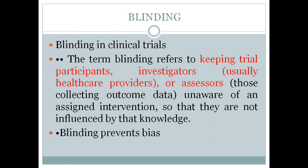In blinding, we have to blind one, two, or all three of these categories, which gives us single, double, or triple blind studies. They should be unaware of the assigned intervention — not knowing what type of treatment they are getting or what group they are allocated to. This prevents bias. One bias seen in case-control studies is the Hawthorne effect or observer bias — when participants know they are being watched, they psychologically change their behavior. This is eliminated because they don't know which group they are in.